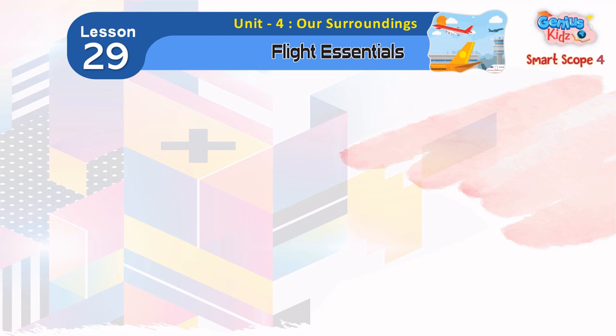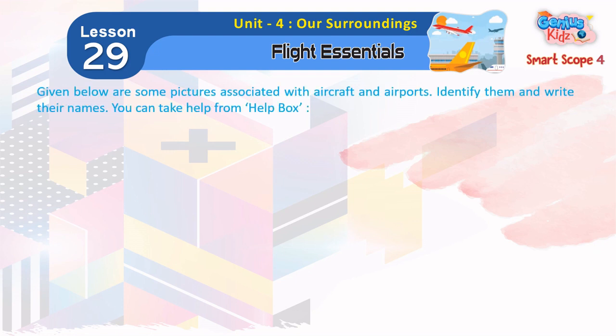Lesson 29: Flight Essentials. Given below are some pictures associated with aircraft and airports. Identify them and write their names. You can take help from the Help Box.